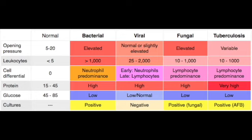Diagnosis of aseptic meningitis is exclusion after ruling out bacterial. LP is the best initial and most accurate test if no mass effect symptoms. CSF shows normal glucose, lymphocytic predominance, and protein usually under 200. Management is supportive: antipyretics, fluids, and analgesics; most patients have a self-limited course.